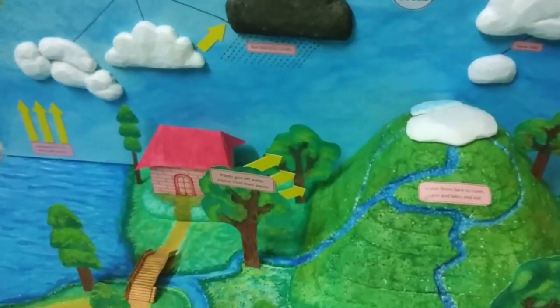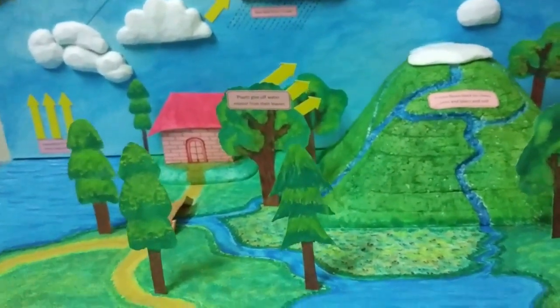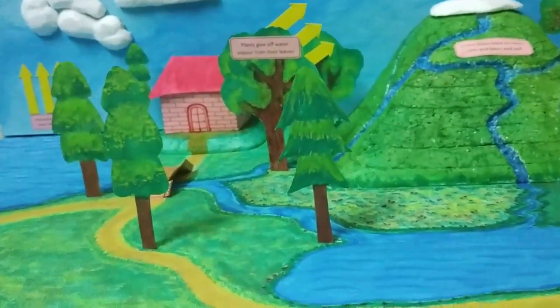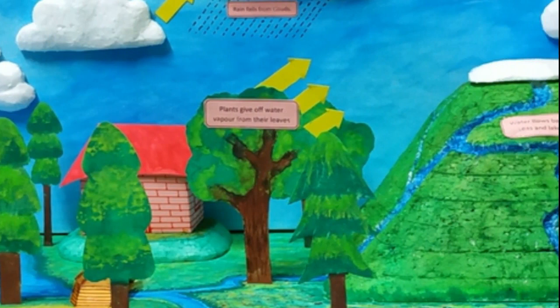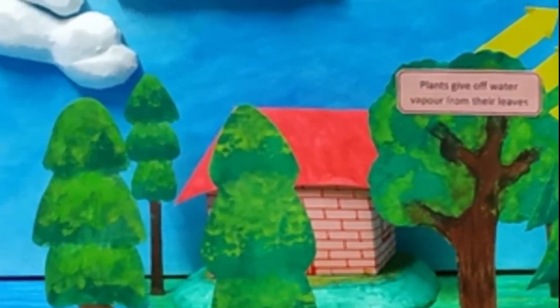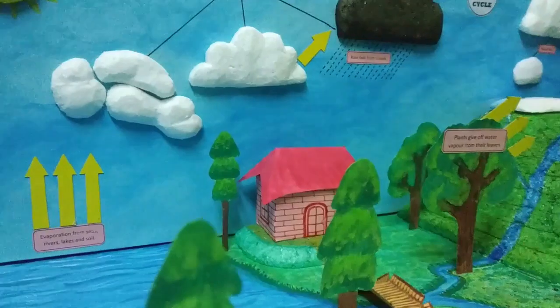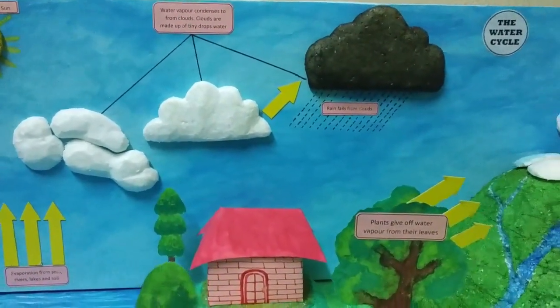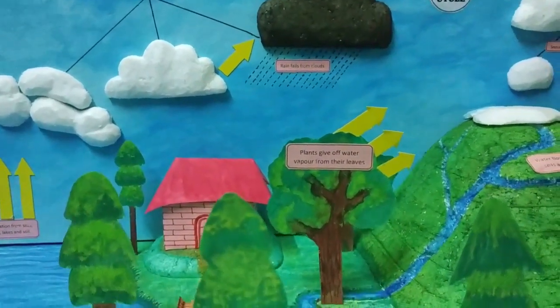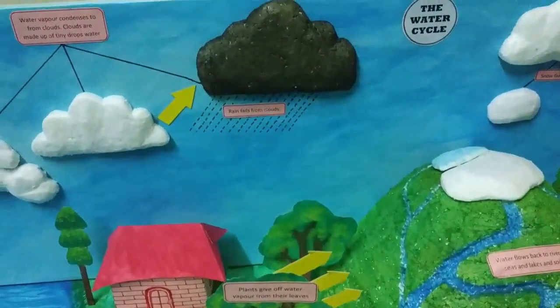Water in different phases moves through the atmosphere — that's called transpiration. Liquid water flows across the land and infiltrates into the ground. Plants take up water from the ground and evaporate it into the atmosphere. Solid ice and snow can turn directly into gas — this process is called sublimation. The opposite can also take place: when water vapor becomes solid, this process is called deposition.